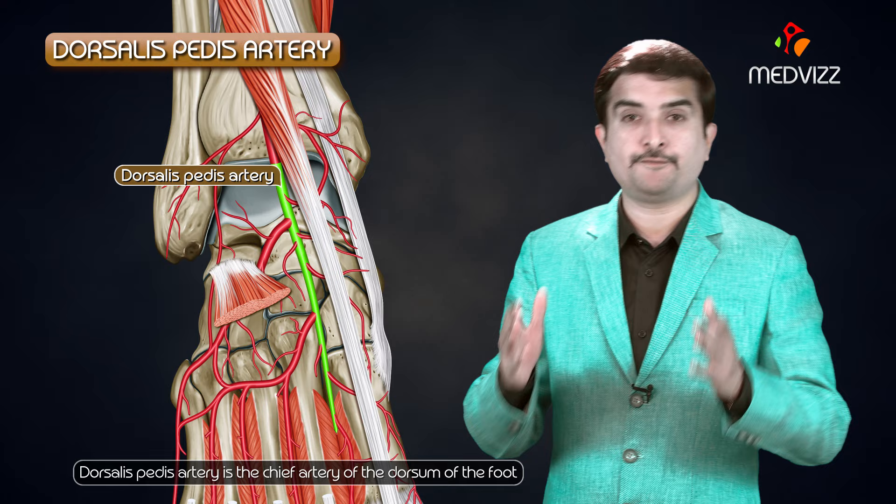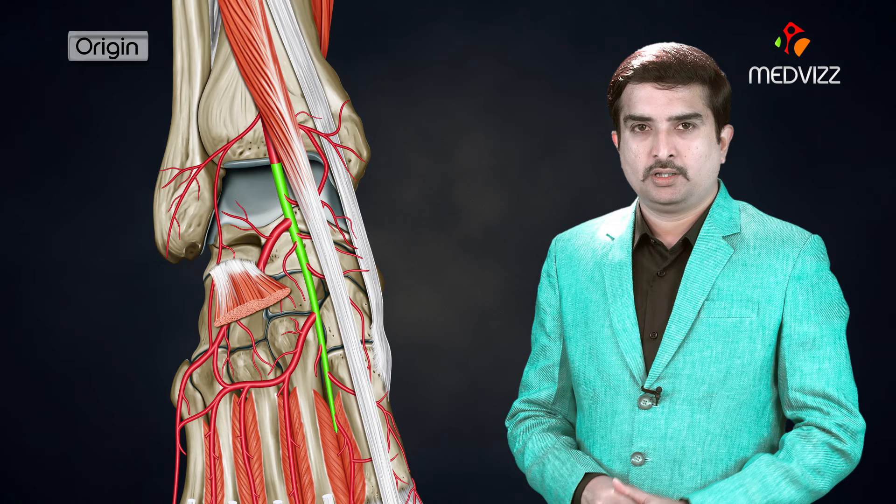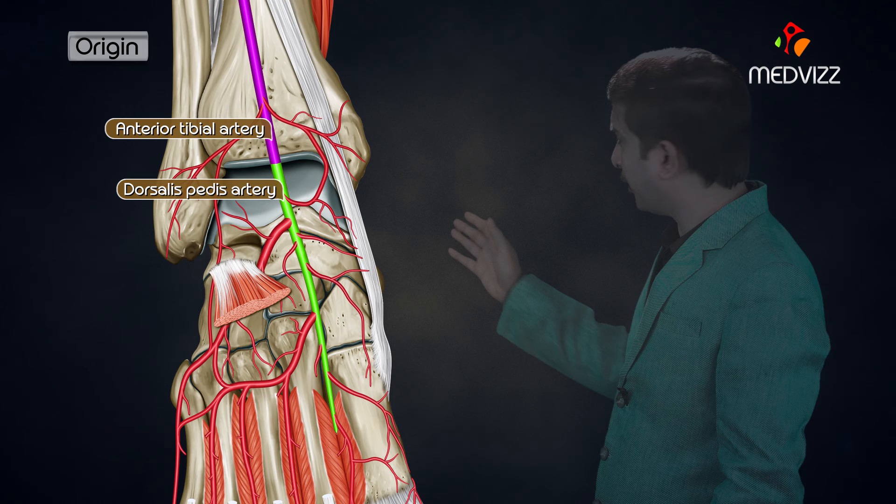The dorsalis pedis artery is the chief artery of the dorsum of the foot. Regarding its origin, the dorsalis pedis artery is a direct continuation of the anterior tibial artery in front of the ankle.